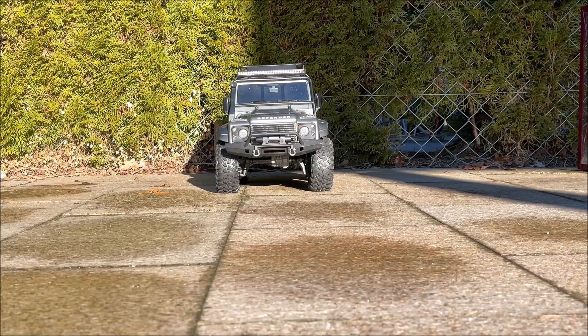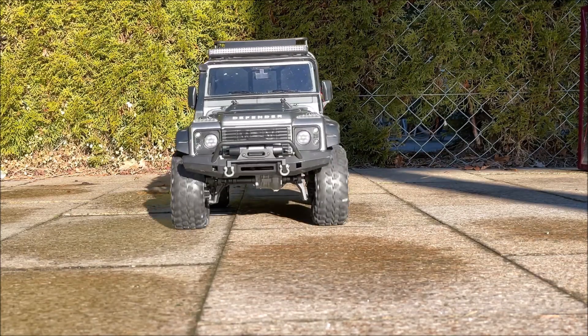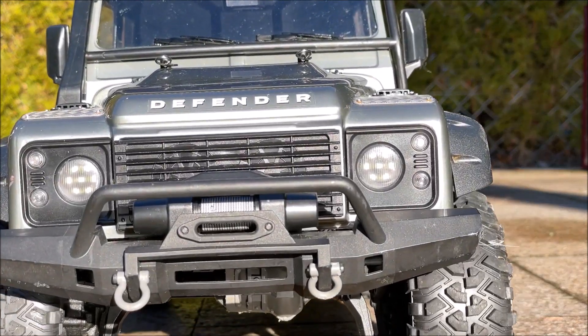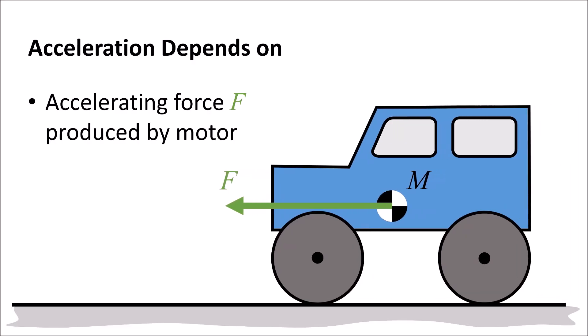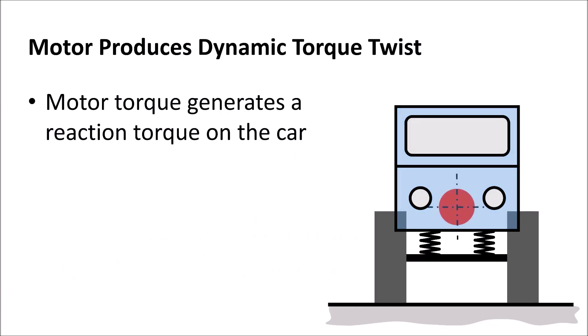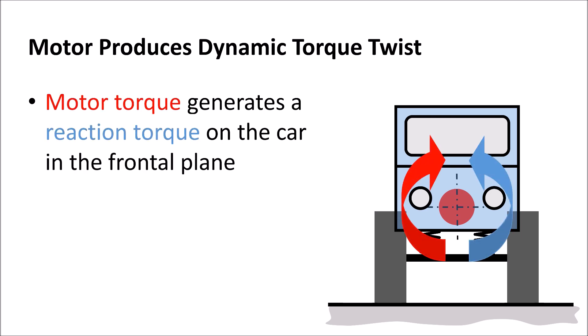Here we focus only on the dynamic one. How does it arise? The motor accelerates the car in driving direction, but the motor torque generates also a reaction torque in the frontal plane. This is a simple action-reaction phenomenon.